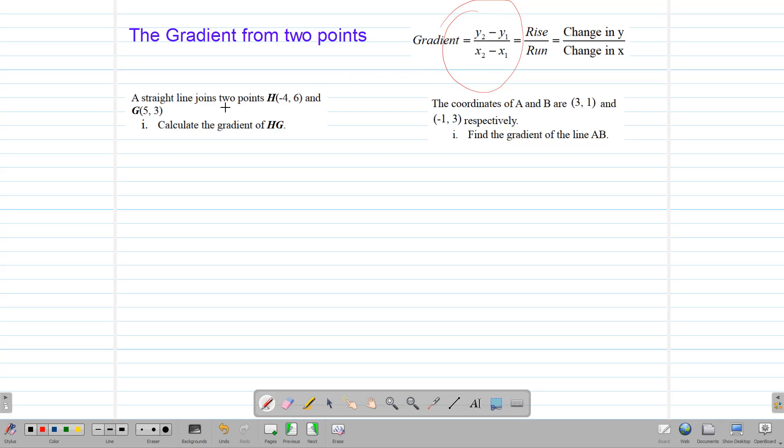Here's our two points, H and G, and we want the gradient for HG. So let's label x1, y1, same procedure, x2, y2. And now we're just going to apply that information to the formula.